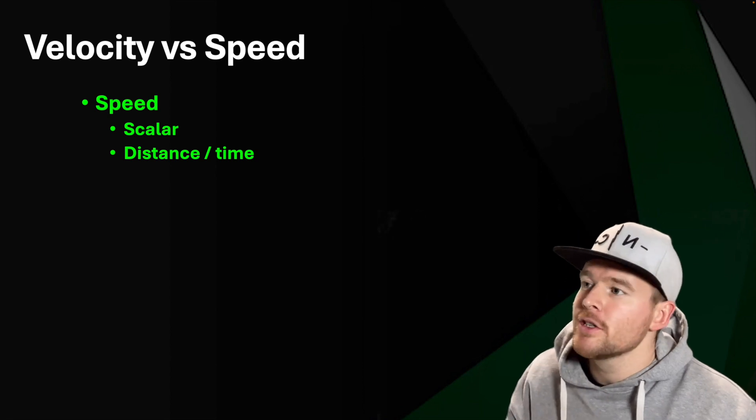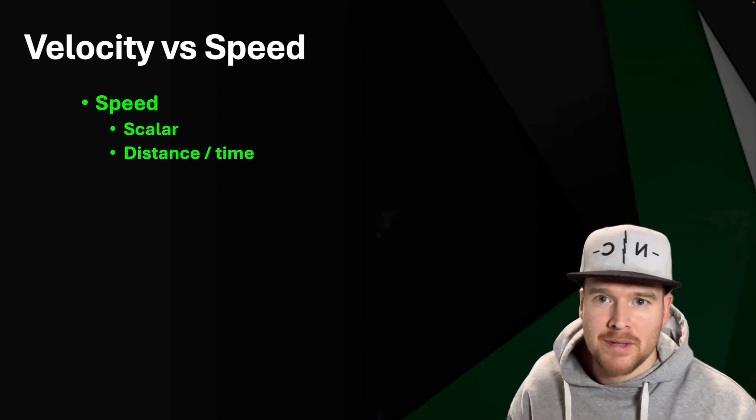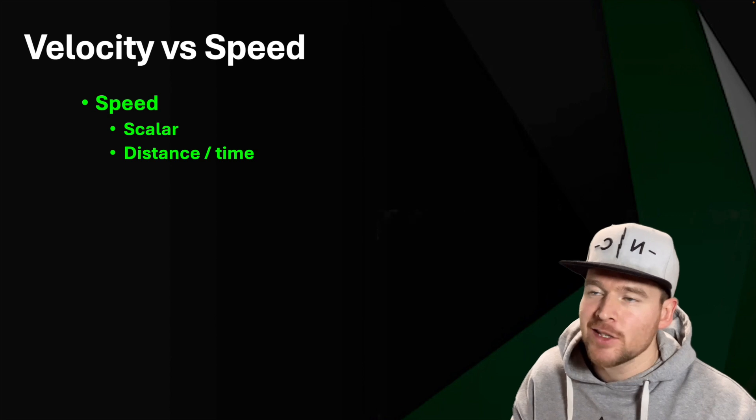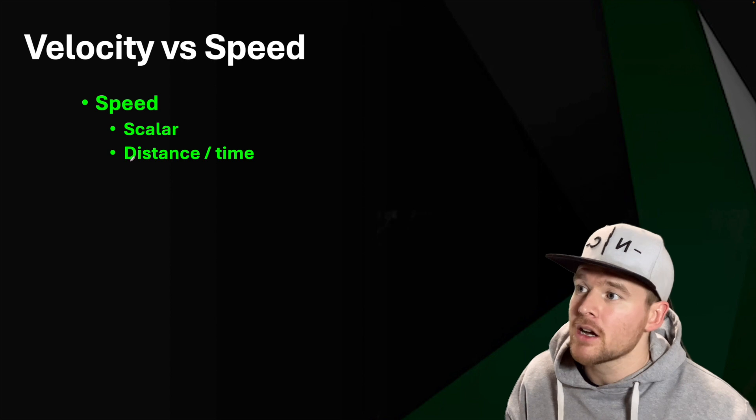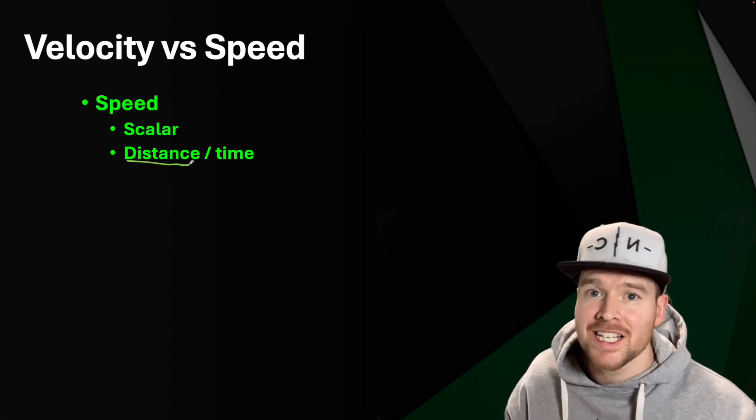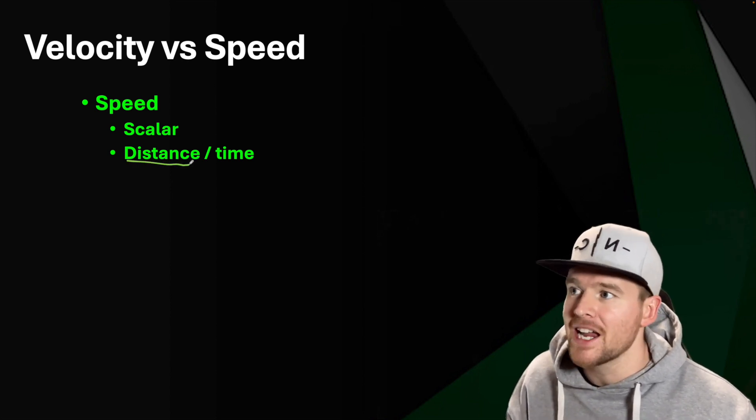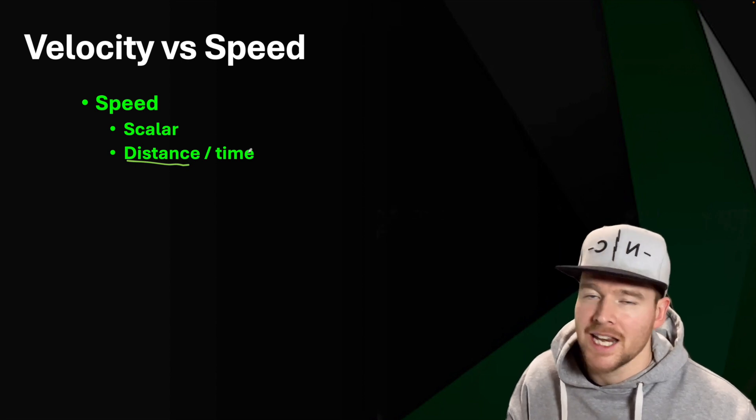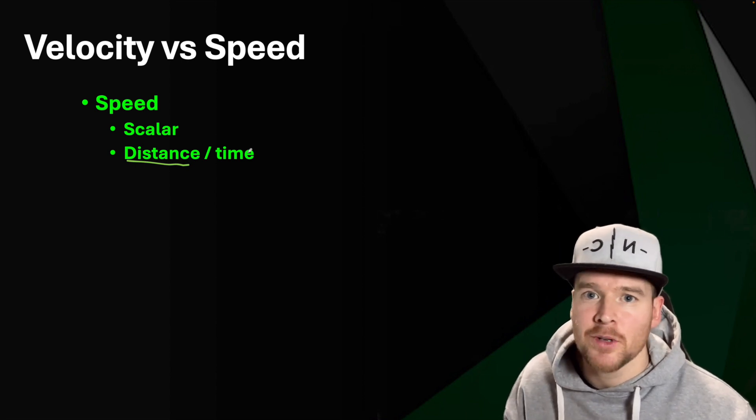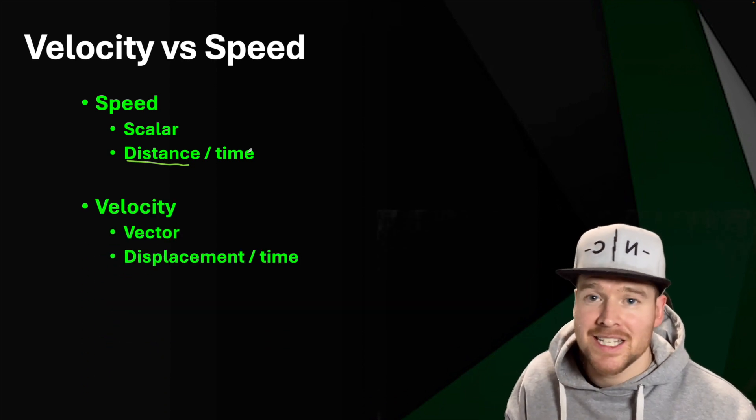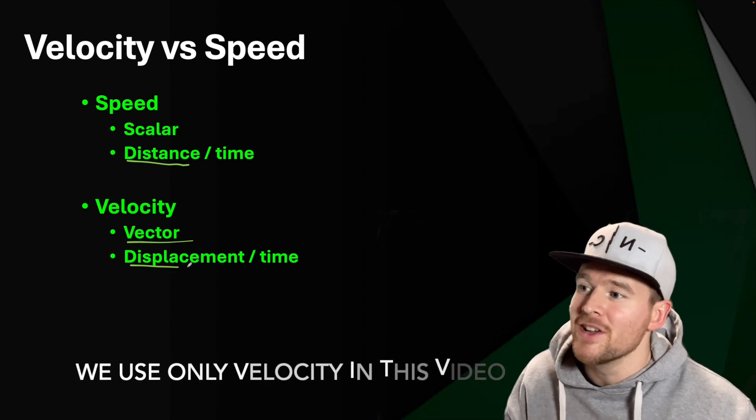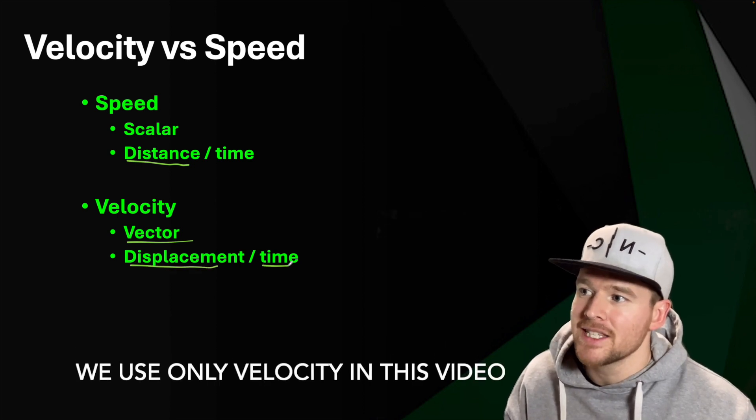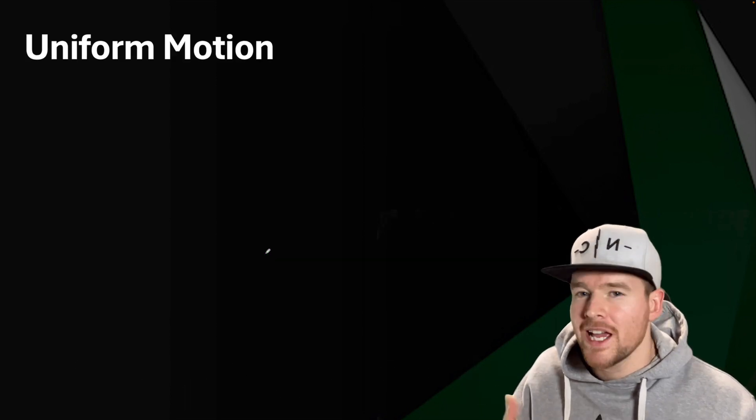Kind of similar to distance and displacement we talked about before. One's going to be a vector and one's going to be a scalar. Speed is a scalar, meaning that we are just considering the magnitude. We're not worried about the direction. It uses distance divided by time. Velocity is very similar, but it is the vector quantity. So we're going to use displacement divided by time.